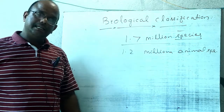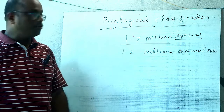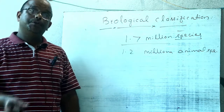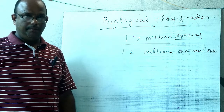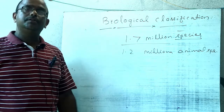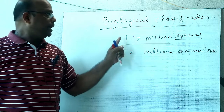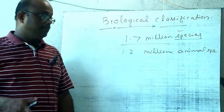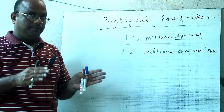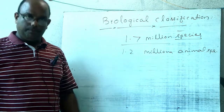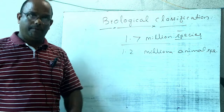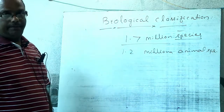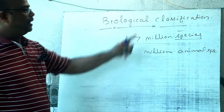The rest are plants and microbes. We study the vast number of living organisms in biology. Biology is the study of living organisms, and in biology we study 1.7 million species. How is it possible? By classifying them.